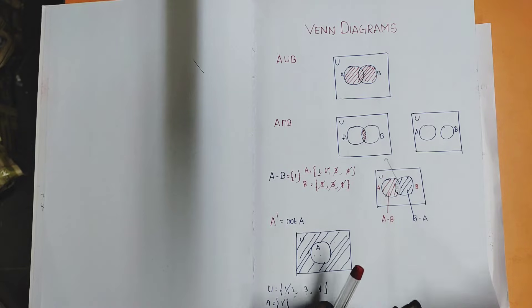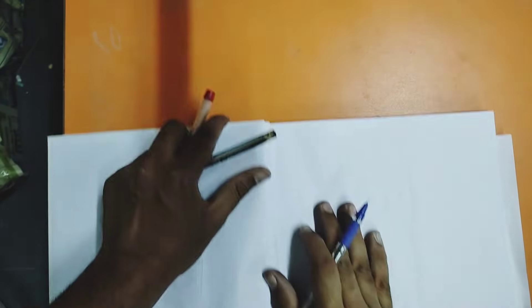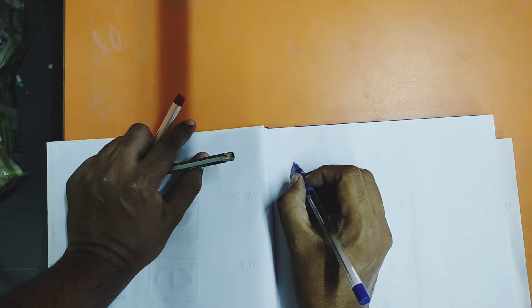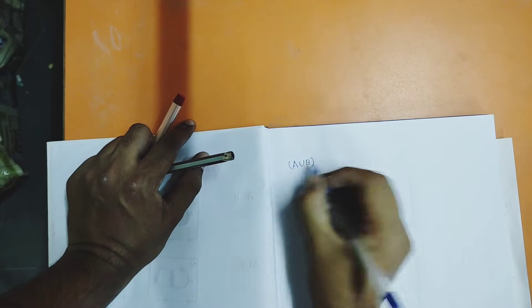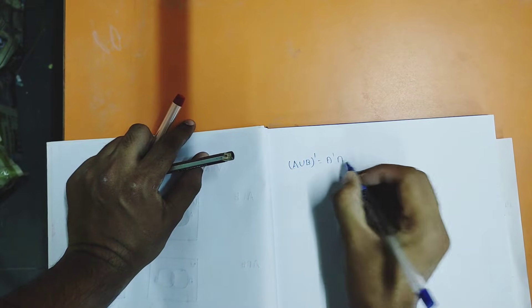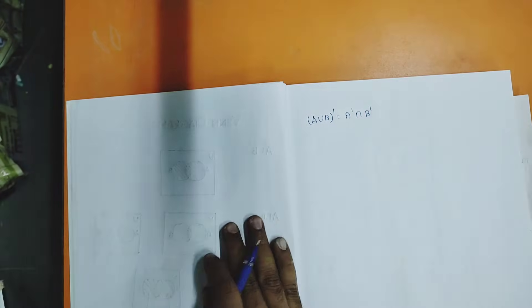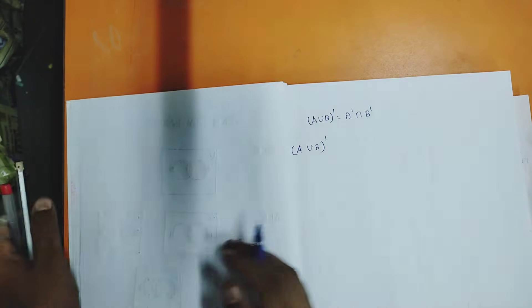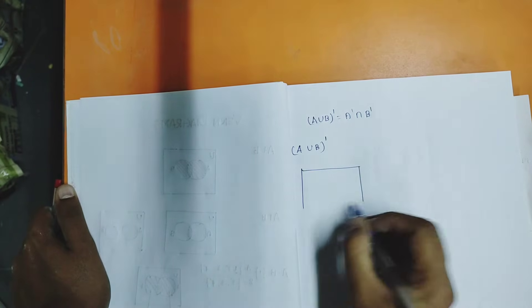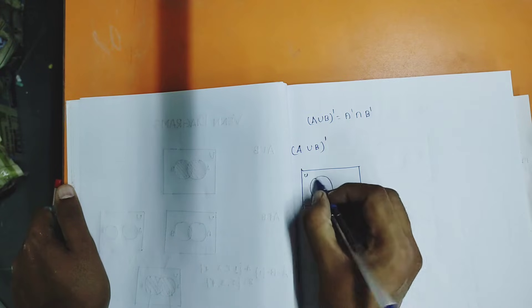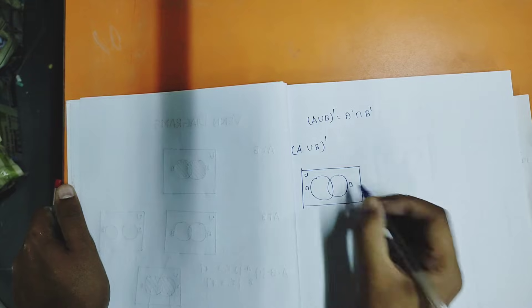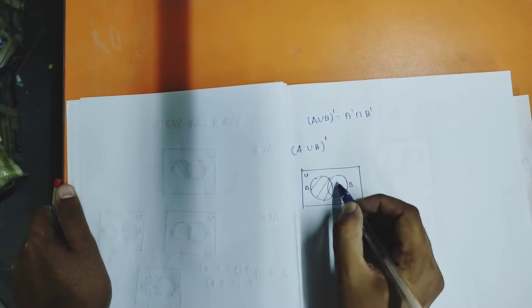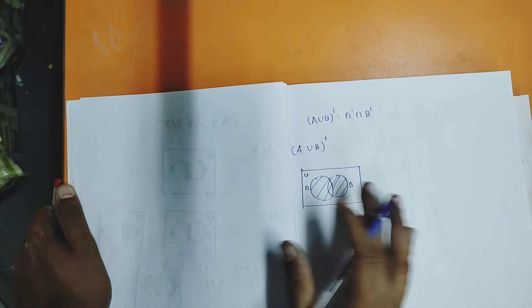Now let us see a few more examples. Let us verify De Morgan's law with Venn diagrams. We will verify the Venn diagram for the complement of A union B. I will draw the Venn diagram for A union B complement step by step. We have the universal set and two sets A and B. What is A union B? It is the entire shaded thing — both A and B whatever is there you shade.